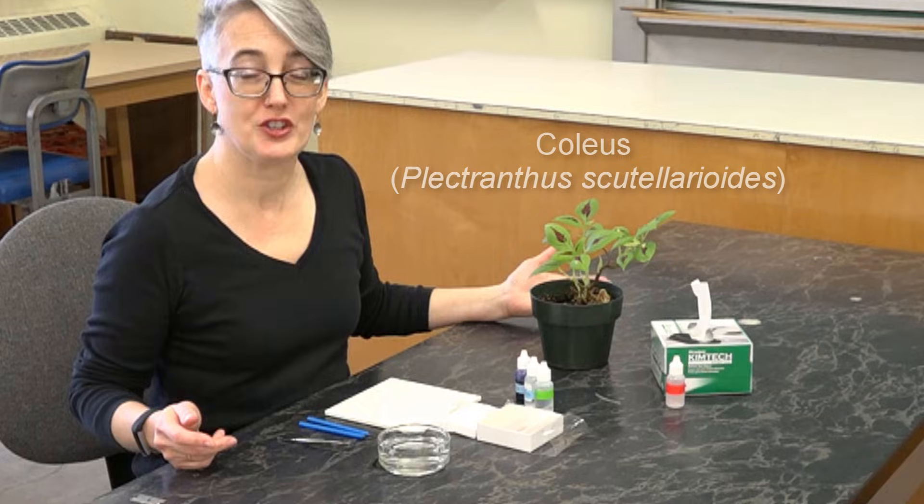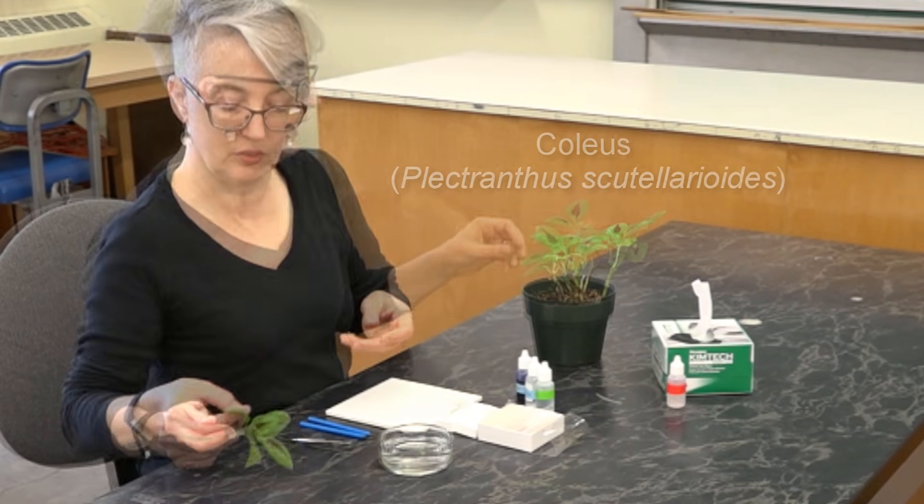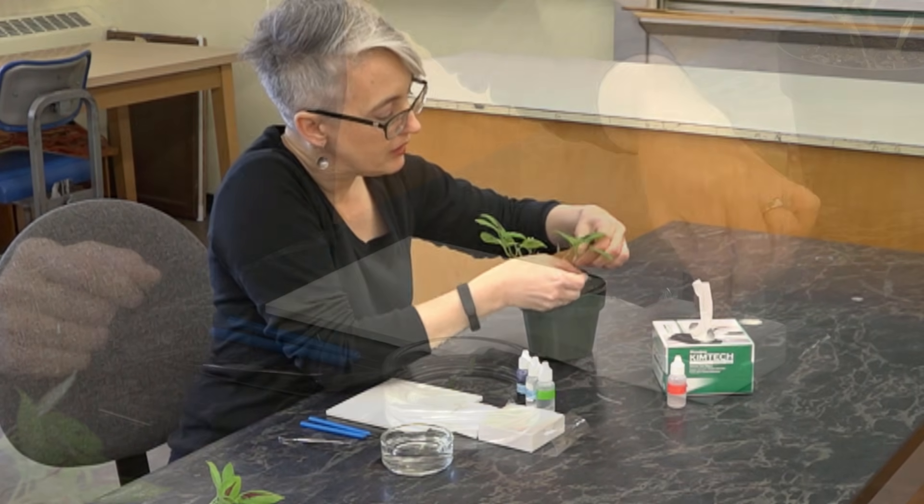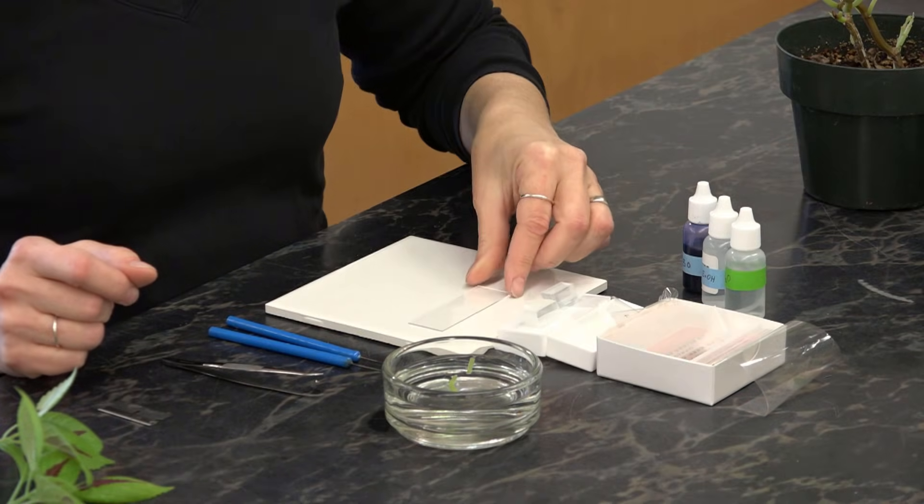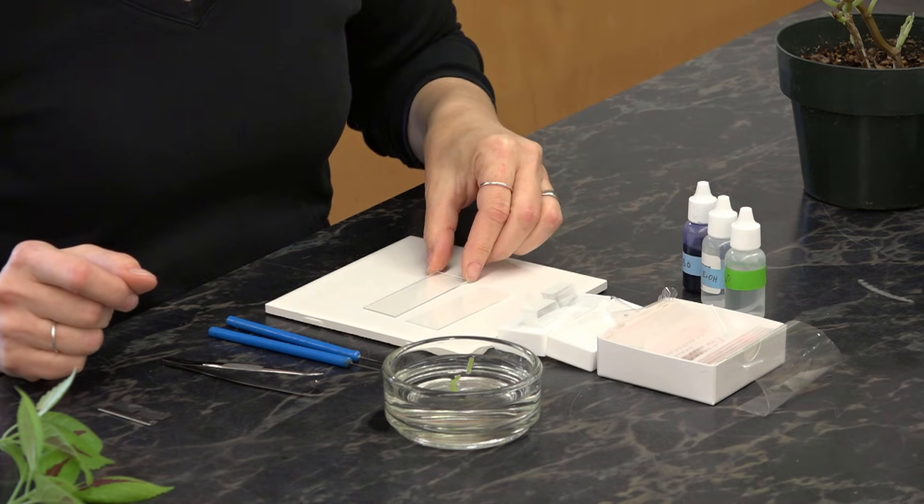For this demonstration of hand sectioning, I'm going to use the coleus plant. First I'm going to harvest some stem sections here. You'll always want to begin by having your slides ready and waiting.